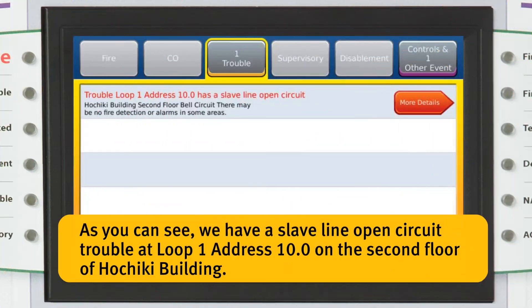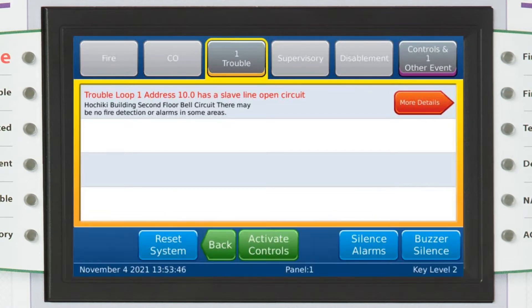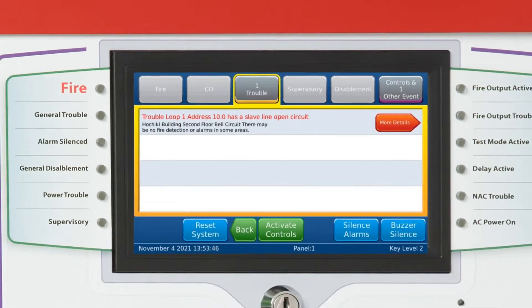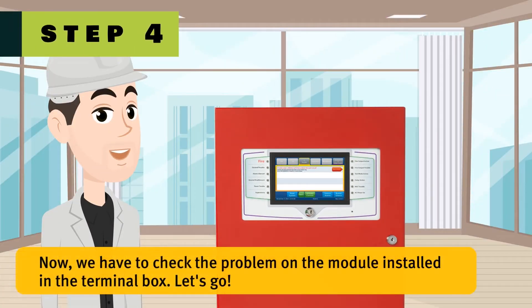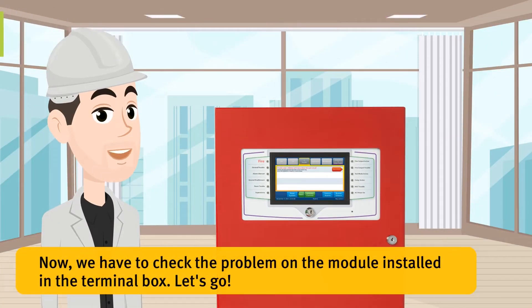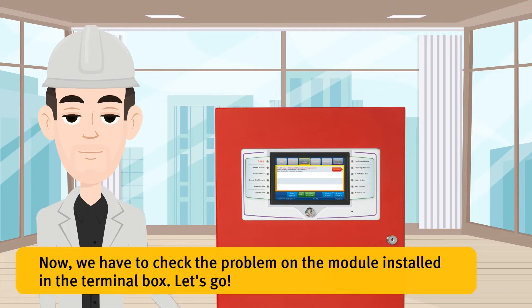As you can see, we have a slave line open circuit trouble at loop 1, address 10, on the second floor of Hochiki building. Now we have to check the problem on the module installed in the terminal box.